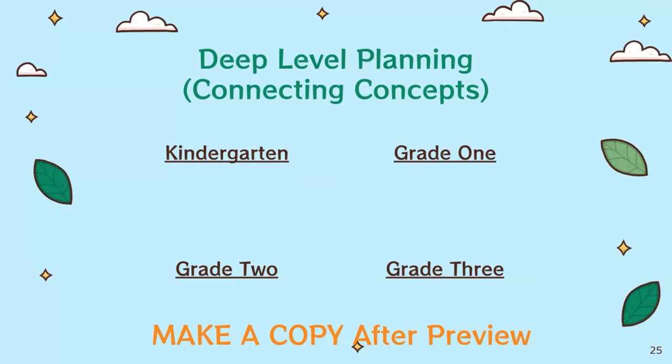Just like the surface phase, these planners have been started for each of the grades. We're not going to spend a ton of time here because I want to get to the transfer phase. But click on the link and you're going to see great activities now in the deep level planning for each of the grades — only for the matter organizing idea right now, but there's more to come. Do all the links work? Give me a thumbs up or let me know if something's not working.